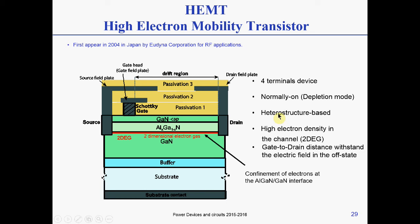It's a heterostructure-based, normally-on device. Normally-on means that without applying any voltage, the channel is already formed. So if you have any voltage applied on the drain, you will see current flowing in the device with zero bias on the gate.